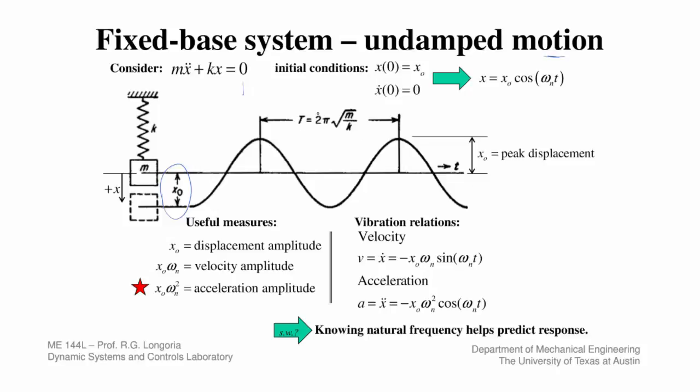The period, the natural period Tₙ, is 2π/ωₙ, and the amplitude is known because I gave it the initial condition of x₀. It's undamped so it's always going to have the same amplitude at every cycle because there's no damping to reduce it.